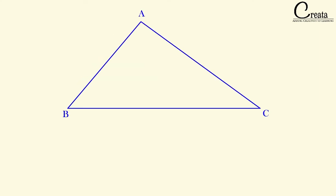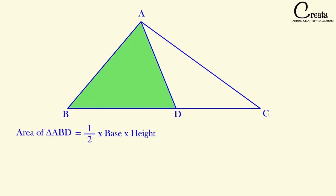Let's take a triangle ABC and draw a line from vertex A meeting side BC at point D. For triangle ABD, the area will be half into base into height. Here, BD is the base, and let's take H as the height — which is the perpendicular distance. So the area will be half into BD into H.